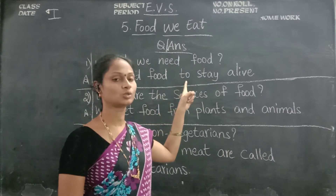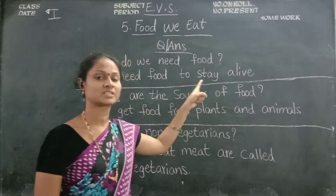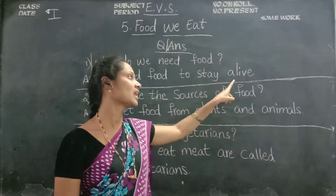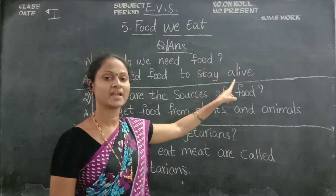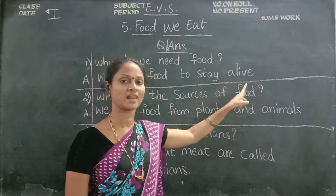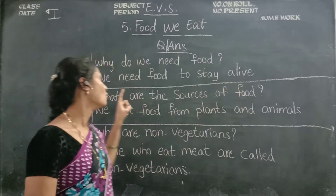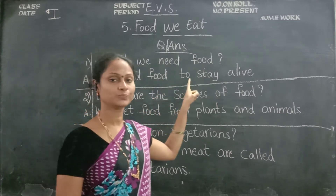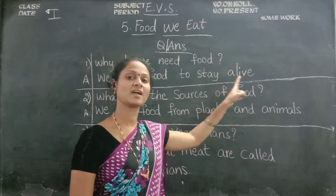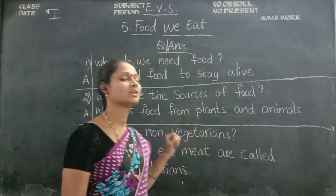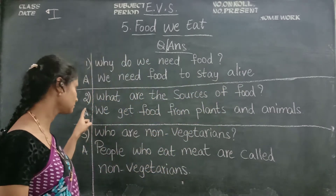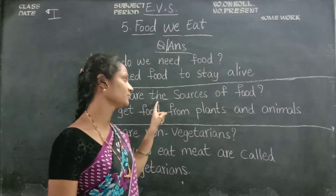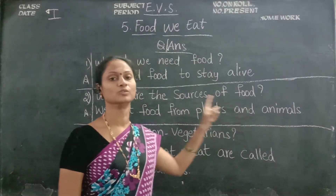To — T.O. Stay — S.T.A.Y. Stay. Alive — A.L.I.V.E. Alive. We need food to stay alive. Now see the second one. What are the sources of food?